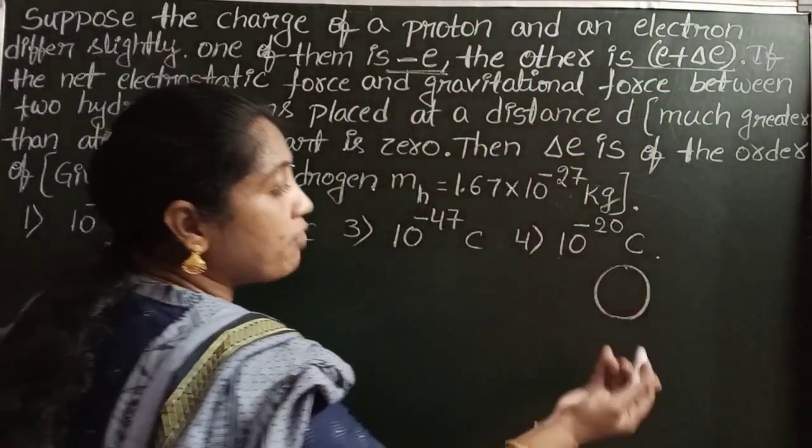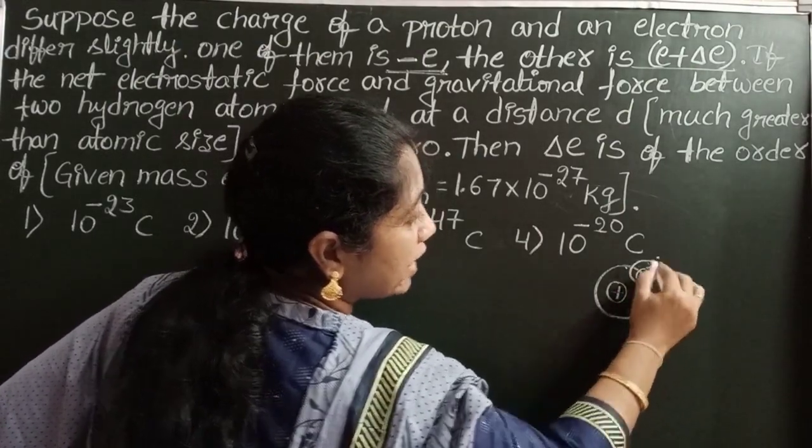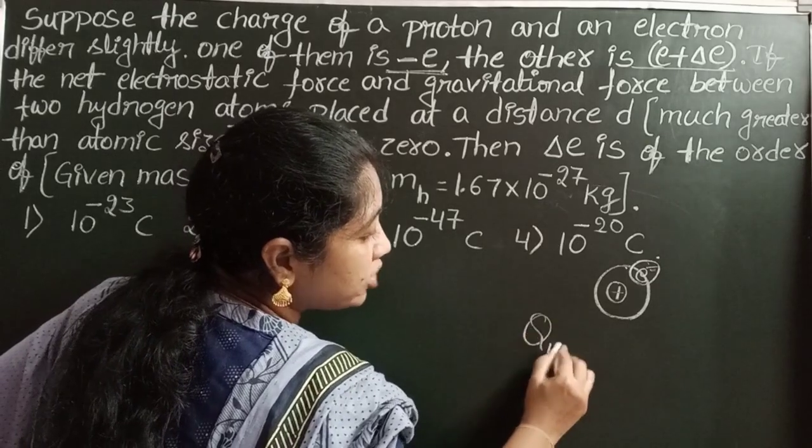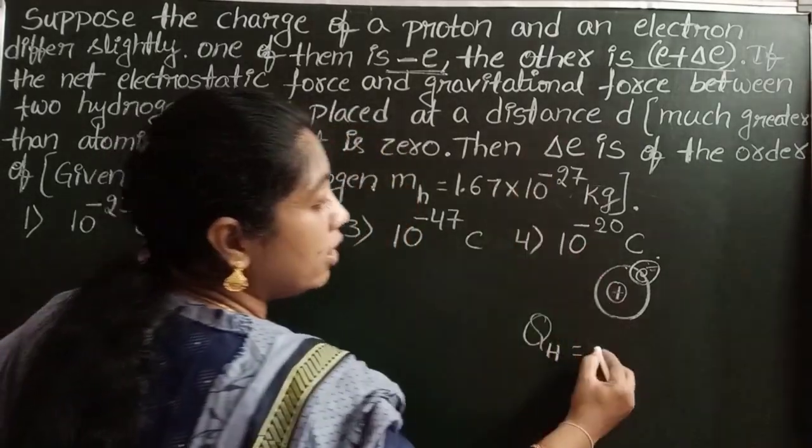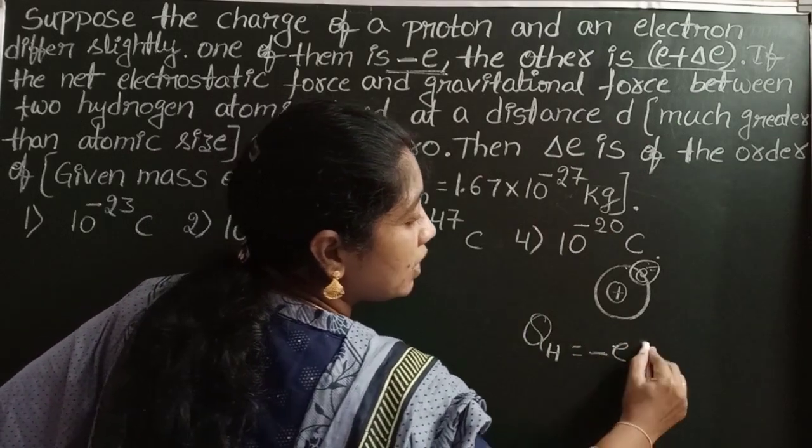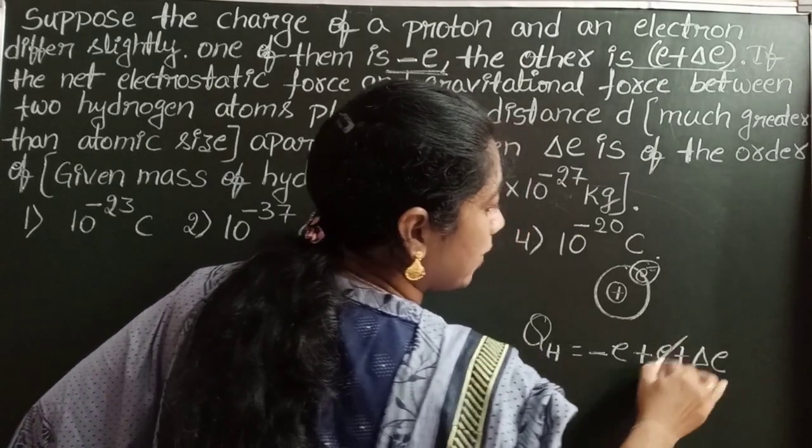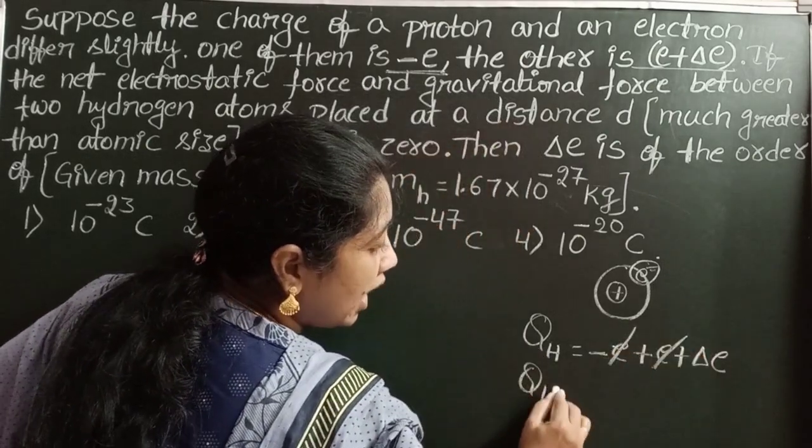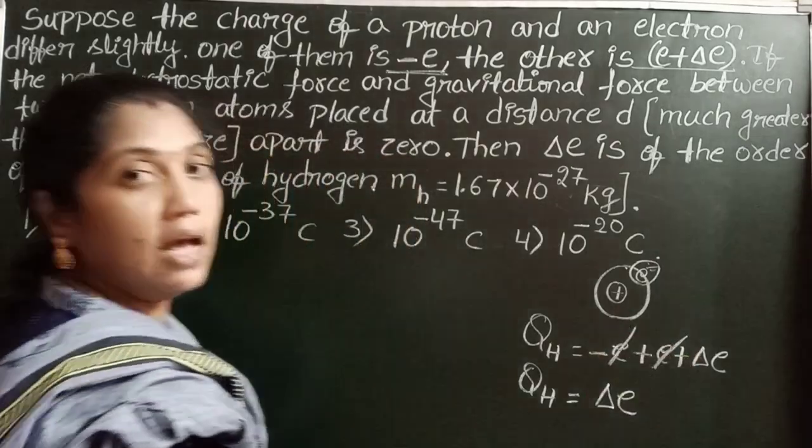So total charge of hydrogen atom, one positive charge and one negative charge, total charge of hydrogen atom equals charge of electron minus E plus charge of proton E plus delta E. So charge of hydrogen atom equals delta E.